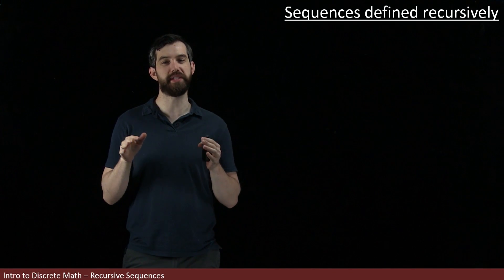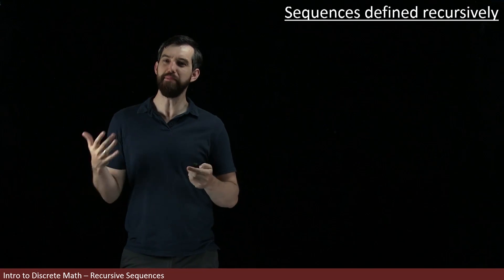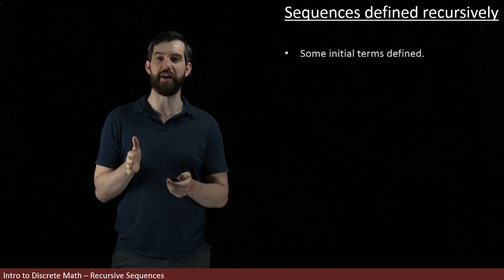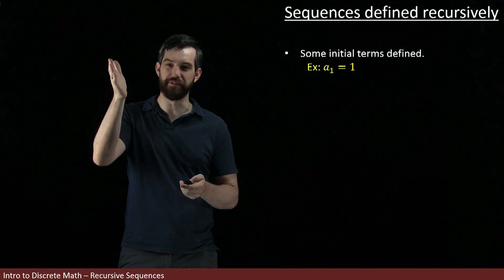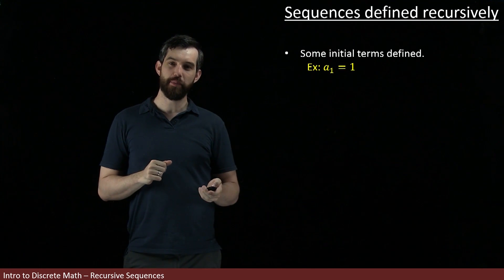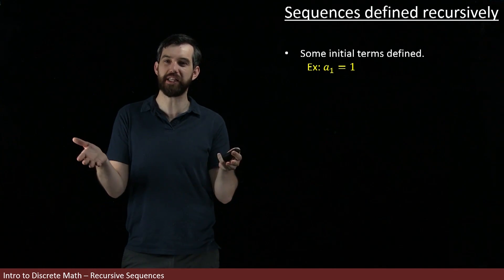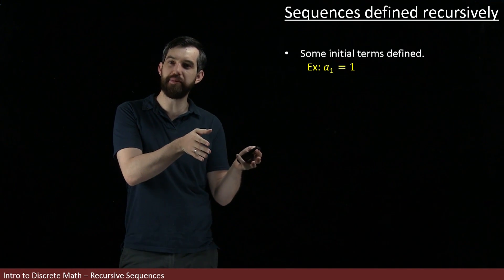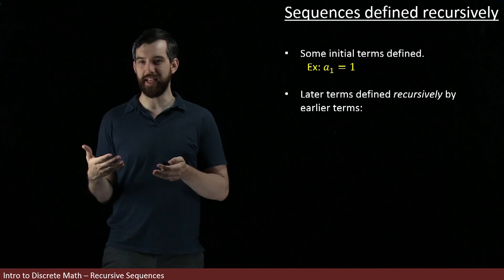In this video, we're going to talk about sequences that are defined recursively. What I mean by that is that maybe you have a few terms which are just specified. For example, I might tell you that A1, the first term of my sequence, is the value of 1. But after these first few terms that have been just explicitly written out, all future terms are described in terms of earlier terms.